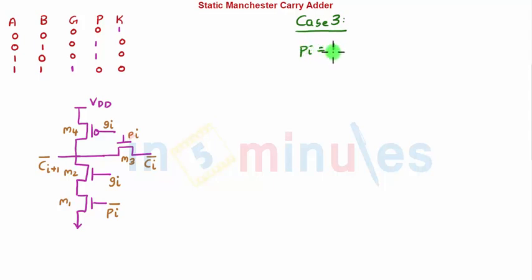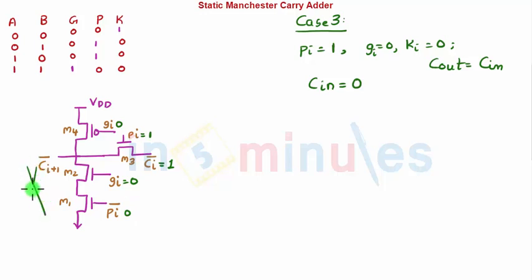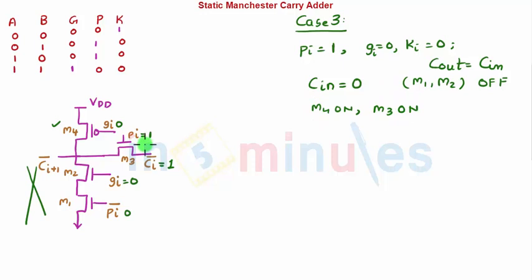Case 3 is the most interesting: propagate signal is 1, generate is 0, and kill is 0. We want C-out to equal C-in. First, take C-in equal to 0, so CI-bar equals 1. With propagate equal to 1 and generate equal to 0, PI-bar is 0 and GI is 0, so M1 and M2 are both off — no pull-down path. M4 is on and M3 is also on.